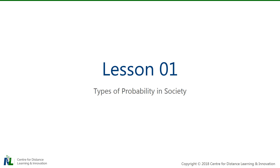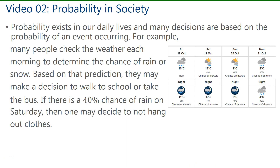Welcome back to lesson one on types of probability in society. Probability exists in our daily lives and many decisions are based on the probability of an event occurring.